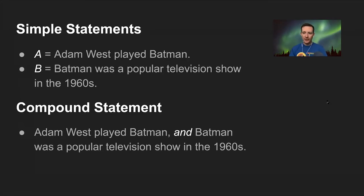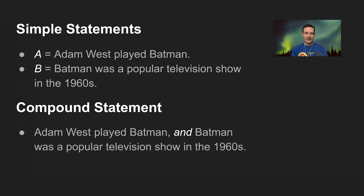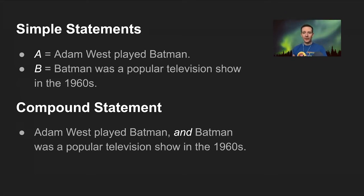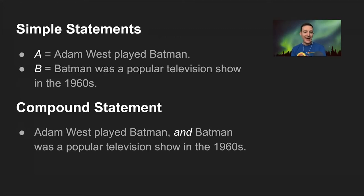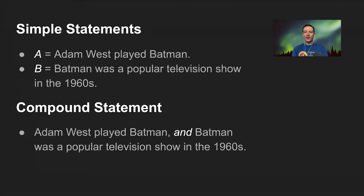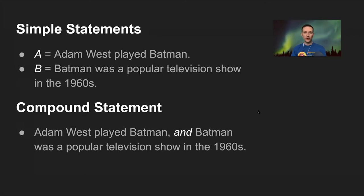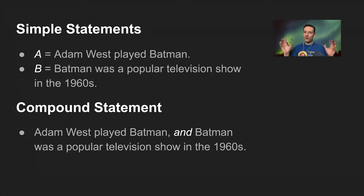For example, let's let capital letter A stand for 'Adam West played Batman,' and let's let capital letter B stand for 'Batman was a popular television show in the 1960s.' Both of those statements happen to be true. They can be connected together with the English word 'and' to form a compound statement: 'Adam West played Batman and Batman was a popular television show in the 1960s.' That entire compound statement is either true or false, determined by the truth values of the simple statements that make it up.